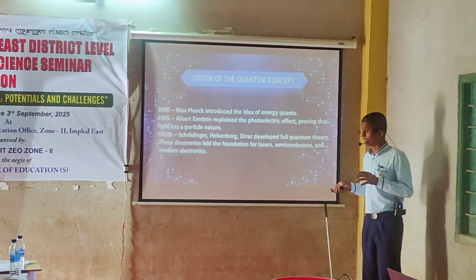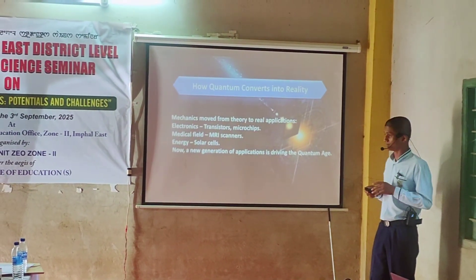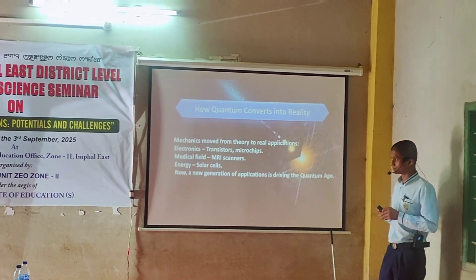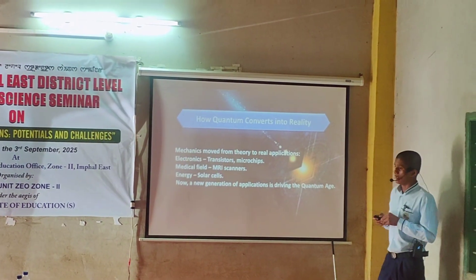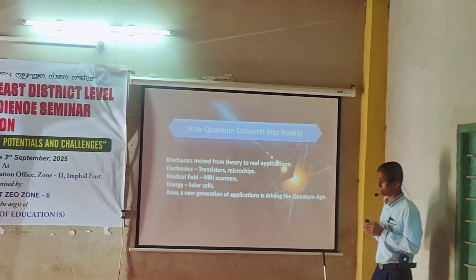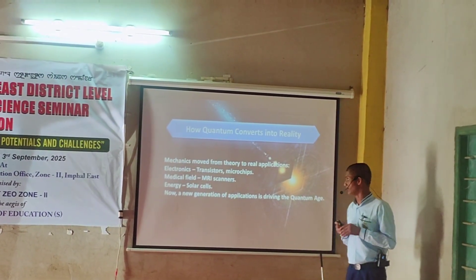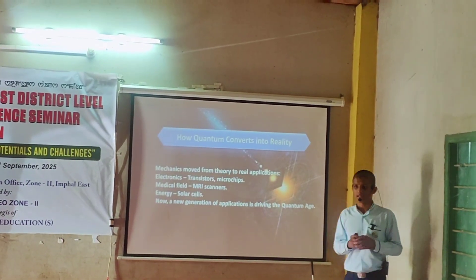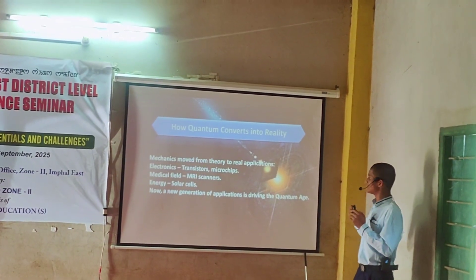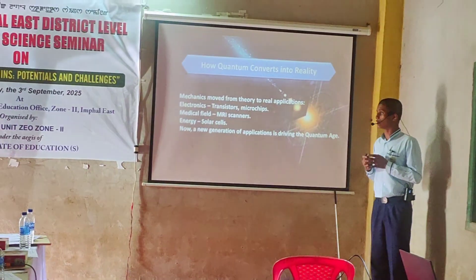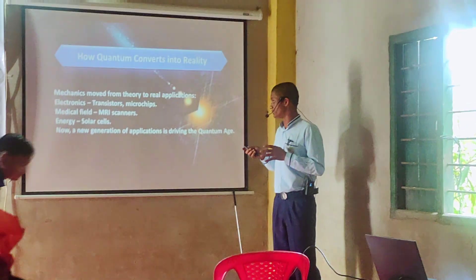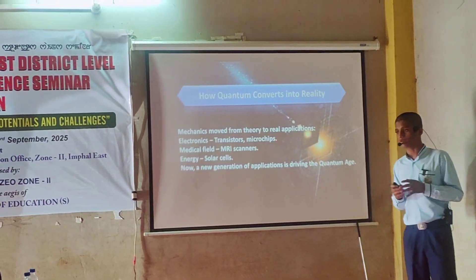After knowing the origins of the quantum concept, let's see how quantum mechanics converted into reality. Mechanics first began as theory and later turned into practical applications. Quantum principles enabled transistors and microchips, forming the backbone of computers and smartphones. In the medical field, MRI scanners use quantum properties of atomic spin for advanced imaging. In energy, solar cells rely on the quantum photoelectric effect to convert light into energy. Now a new generation of applications is driving the quantum era.